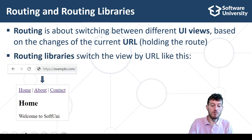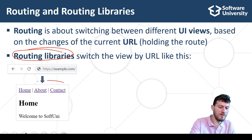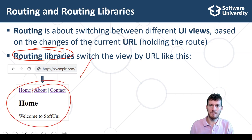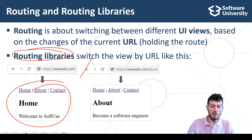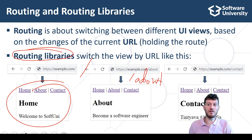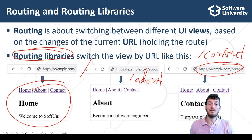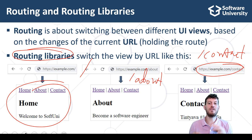Routing libraries switch the view by URL. This is the home URL. This is the about URL — slash about. This is the contact URL — slash contact. Different routes in the URL switch to different views. This is the concept of routing in web apps.